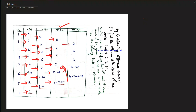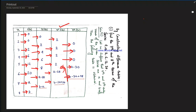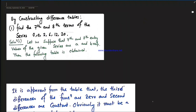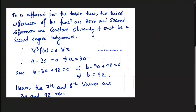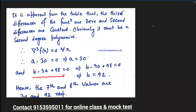Second order difference is constant: 2 minus 2 equals 0; 2 minus 2 equals 0; 2 minus 2 equals 0. Third order difference: a minus 30 equals 0, b minus 3a plus 48. Definitely a minus 30 equals 0, and b minus a minus 38 plus 48 equals 0. So the value of a is 30.